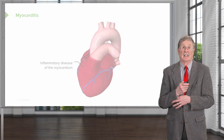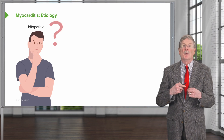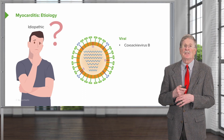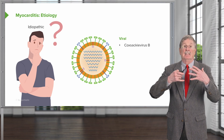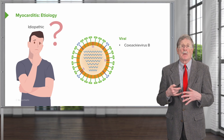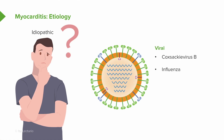It has multiple different causes. It can be idiopathic. In most cases it is probably an autoimmune myocarditis, but we don't know necessarily what drives that. In most cases of myocarditis in the US and European population, it's going to have a viral cause. The most common include Coxsackie virus B, influenza virus, HIV, and echovirus. There's also a big question mark about whether coronavirus can be a cause of myocarditis — the answer right now is no, but we'll talk more about that.